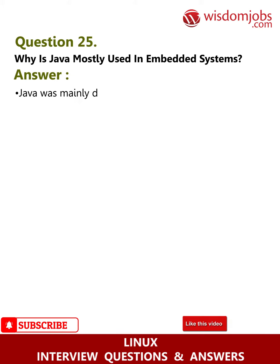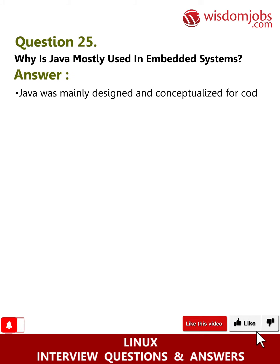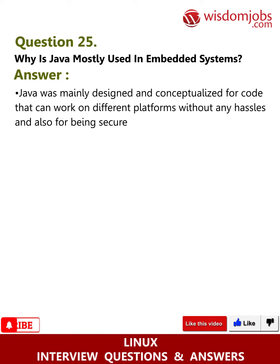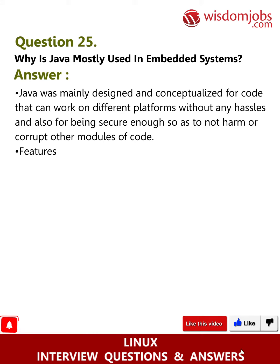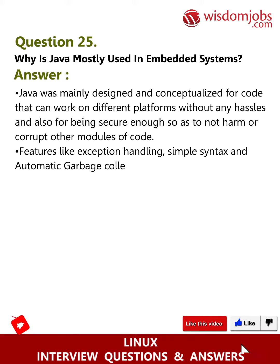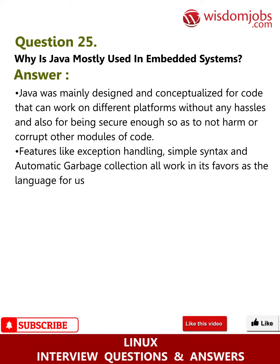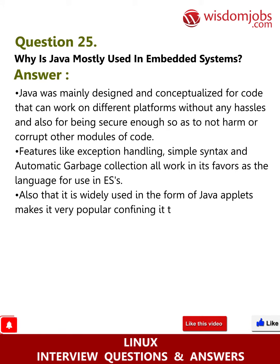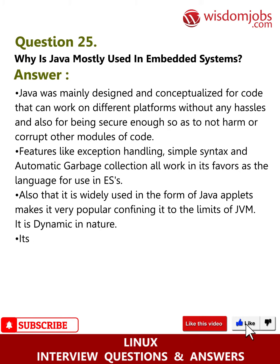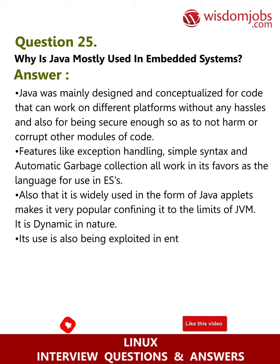Question 25: Why is Java mostly used in embedded systems? Answer: Java was mainly designed for code that can work on different platforms without any hassles and to be secure enough not to harm or corrupt other modules. Features like exception handling, simple syntax, and automatic garbage collection work in its favor. Its wide use in the form of Java applets makes it very popular, and being confined to the JVM makes it dynamic in nature. It is also used in enterprise systems as J2EE, J2SE, and J2ME for mobile applications.